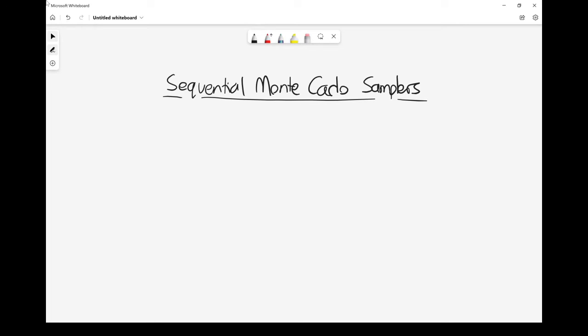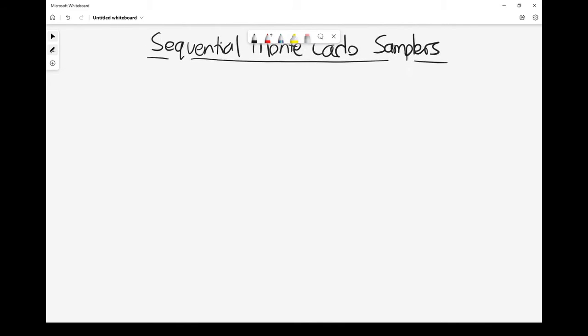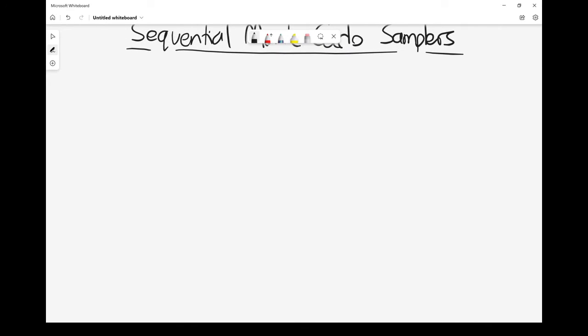In the previous video, just a very quick recap, we talked about the context, and we described a situation where we've got something that's called the target distribution.